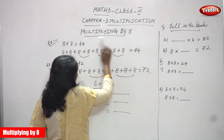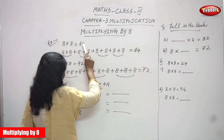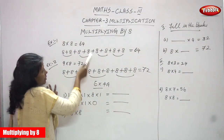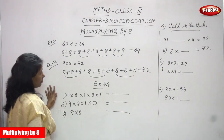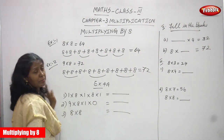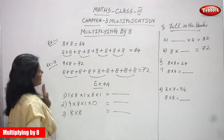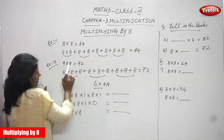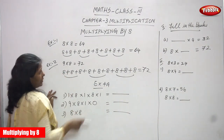So both methods give the same answer. Whether you use the multiplication method or the repeated addition method, you can get the same answer. That is what I said — both methods give the same answer. Next, Example 2: 9 into 8 is equal to 72. You have to say the 8th table up to 9.